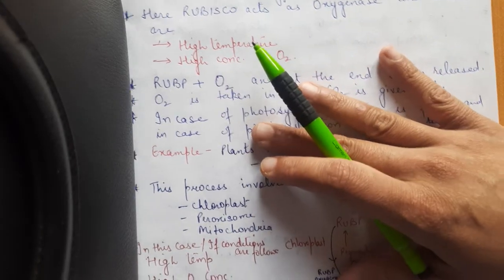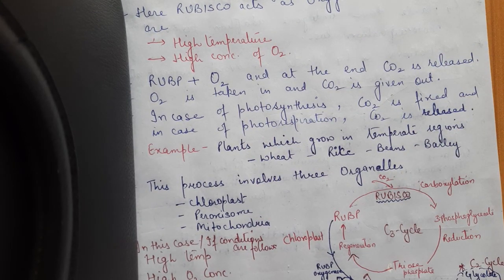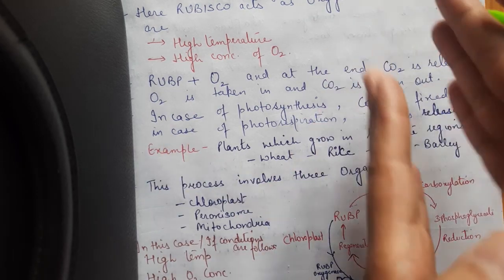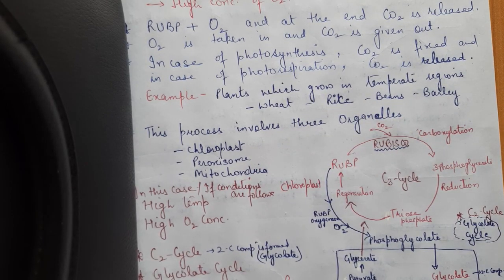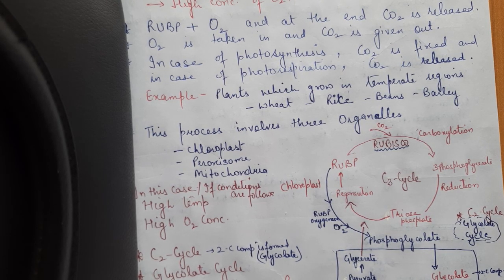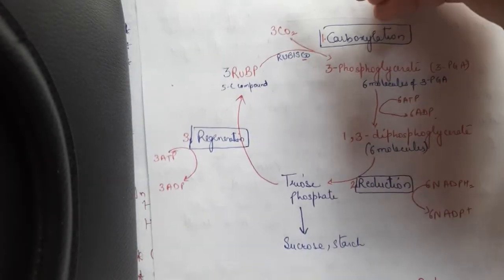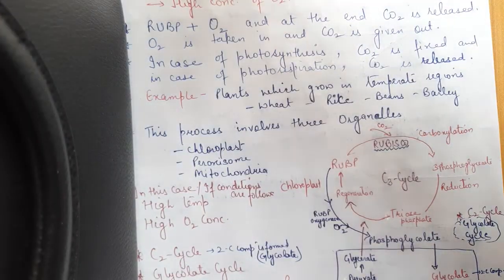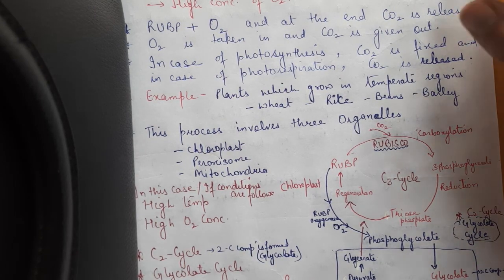When Rubisco acts as oxygenase, oxygen is added to RuBP and carbon dioxide is released. So oxygen is accepted by RuBP and carbon dioxide is released. In photosynthesis, during dark reactions, carbon dioxide is fixed — but in the case of photorespiration, carbon dioxide is released.